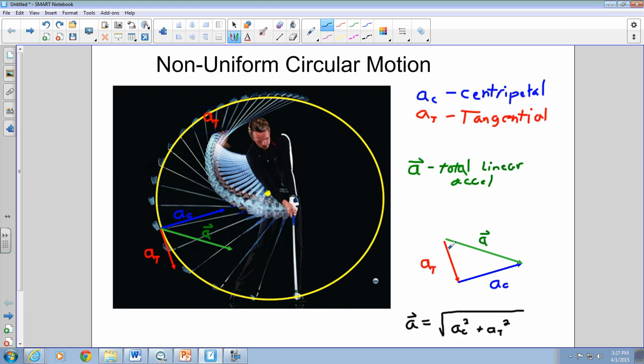What we want to find next is this angle that the total linear acceleration makes with the tangential line. So we want to know what this angle phi is. We don't use theta for this angle, we use phi, the symbol phi. And that is going to be equal to our inverse tangent of your centripetal acceleration over tangential acceleration.